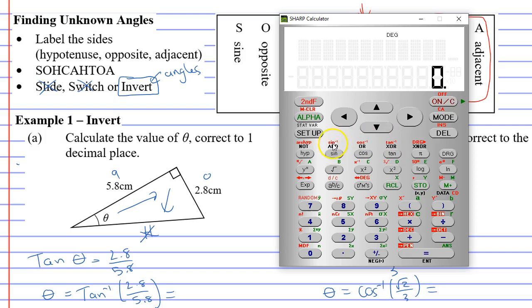So you've got sine and then inverse sine, cos, inverse cos, and so on. So we just use the second function button. Second function tan gives you inverse tan.